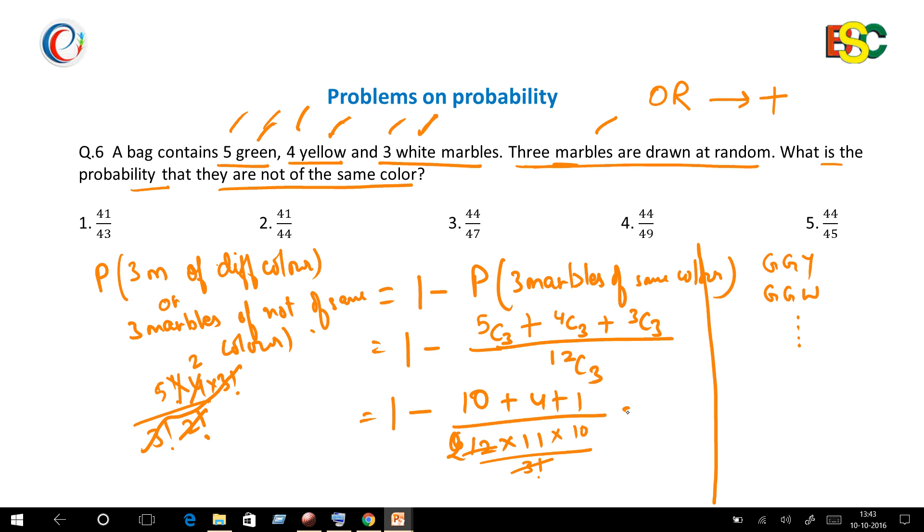Which is equal to 1 minus 15 over 220. 5 threes are 15 and 5 forty-fours are 220, so it is equal to 41 over 44.